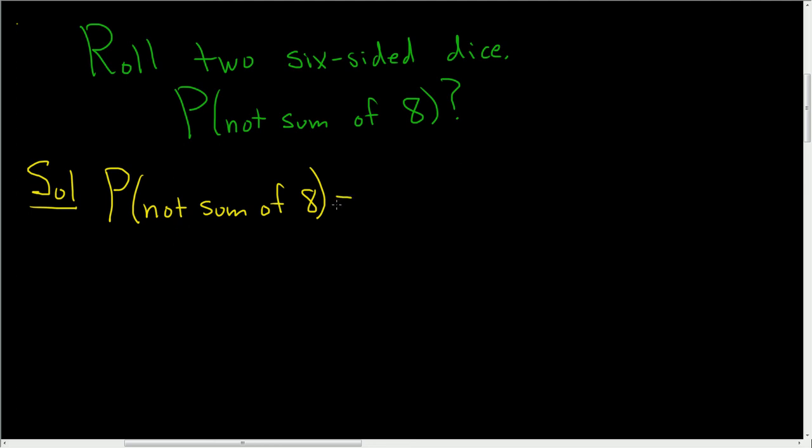So whenever that happens, whenever it's too hard, it's better to consider the following. This is one minus the probability of the complement. So what is the complement? Well, in English, that would be the opposite. So the opposite of not a sum of eight, or the complement of not a sum of eight, is sum of eight. So it's one minus the negation of this statement. It's called the complement in mathematics.